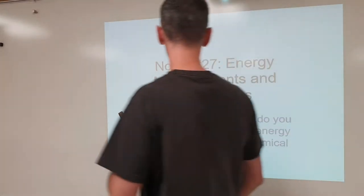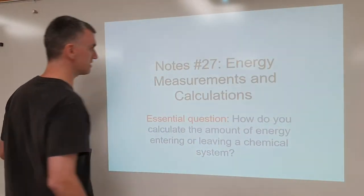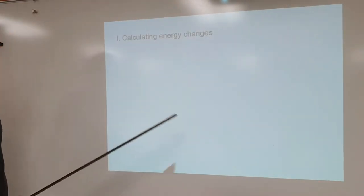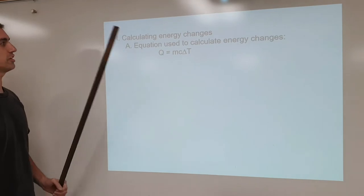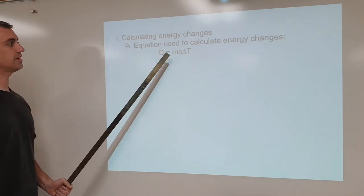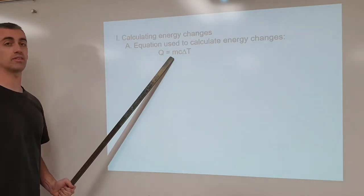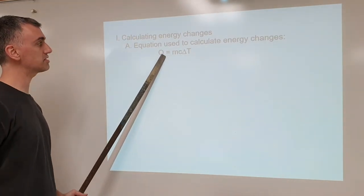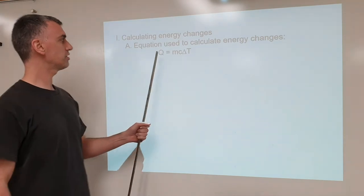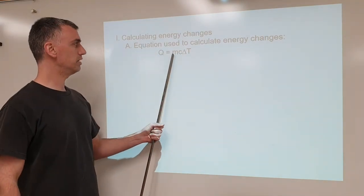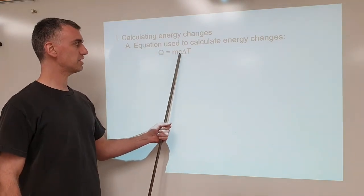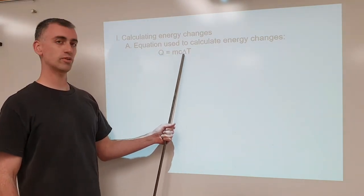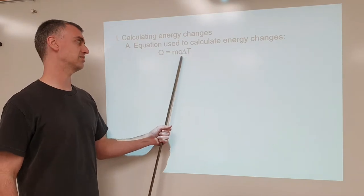Let's talk about energy measurements and calculations. If you're going to calculate energy changes, you need to get familiar with this equation: Q equals mc delta T. The triangle is called delta.